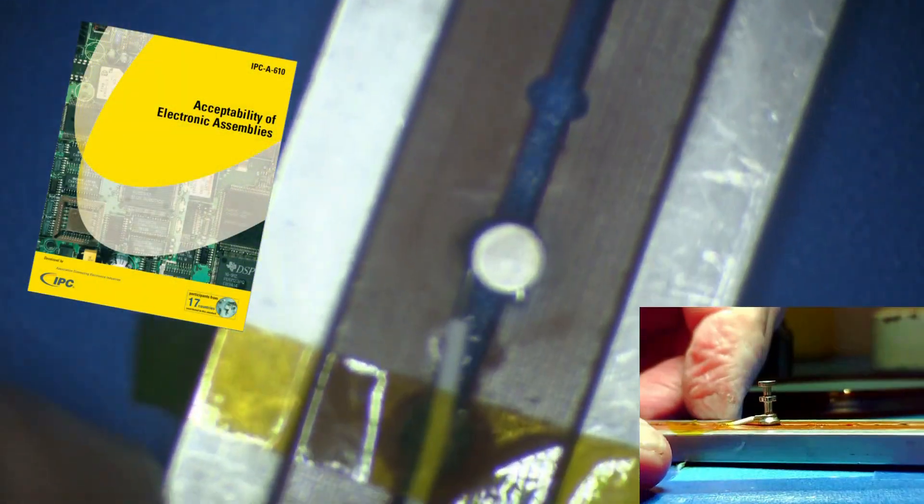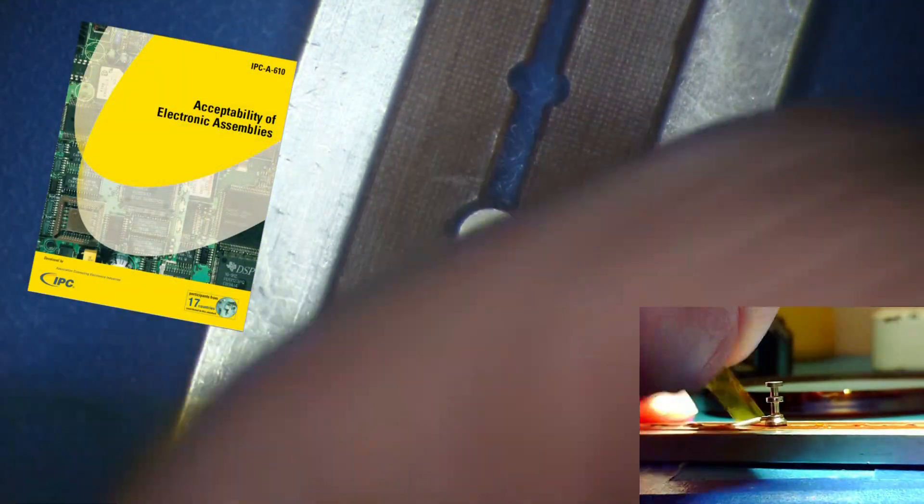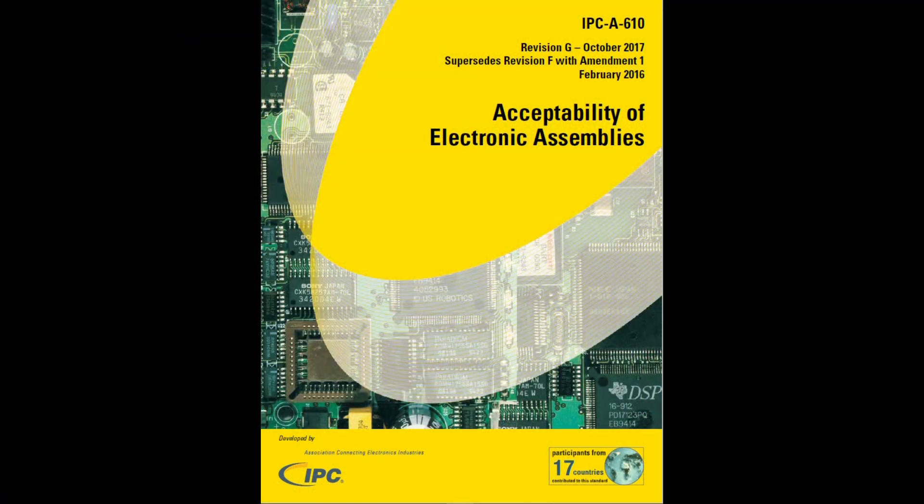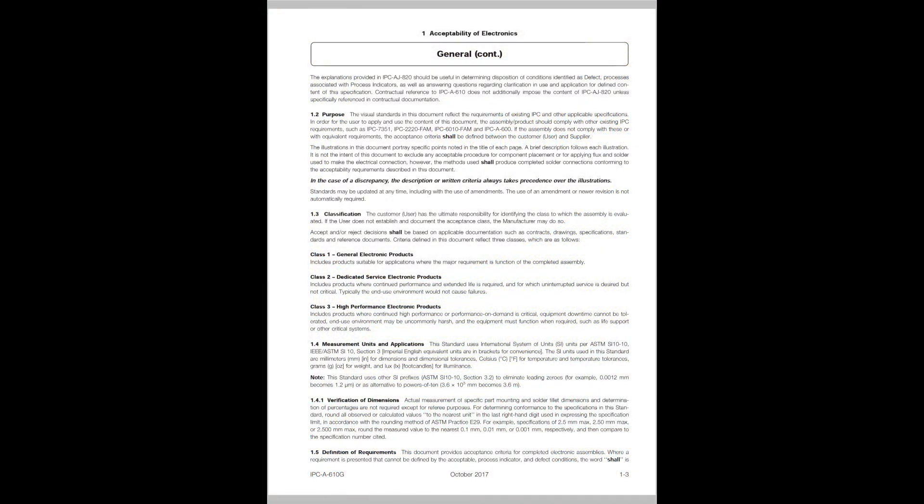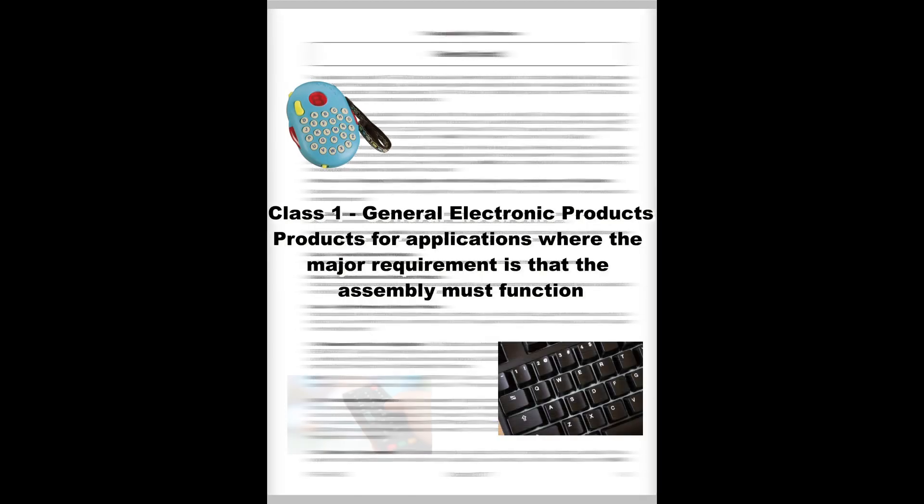Inspect the assembly according to the IPC-A-610 document. The IPC-A-610 groups electronic assemblies into three classes. These classes are based on the intended end-use environment for the assembly. Class 1, General Electronic Products, are those where the major requirement is that the assembly is functional.